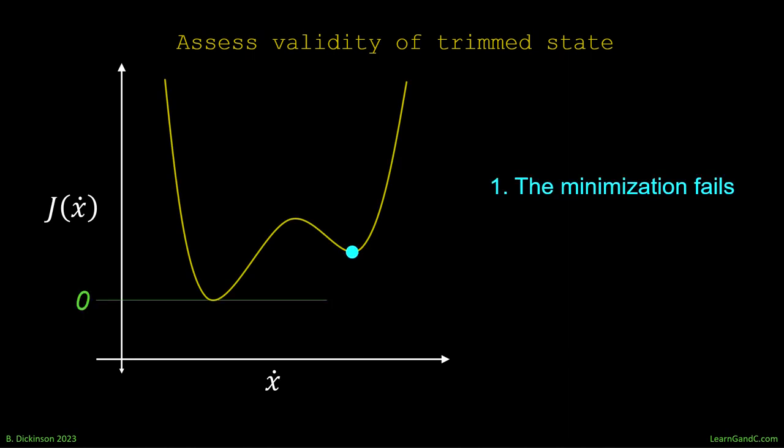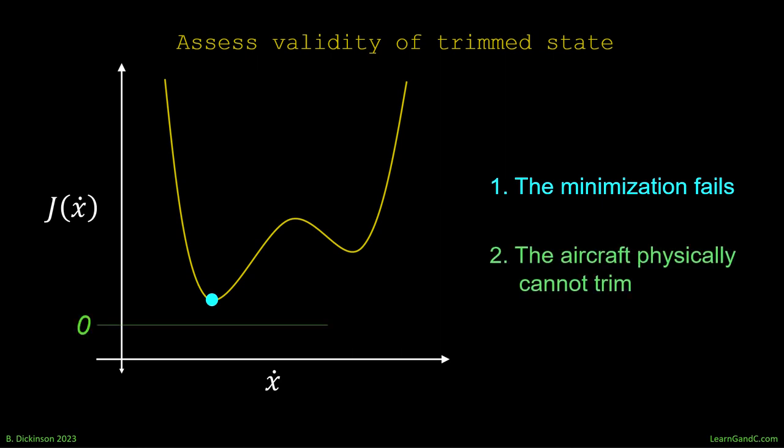There are two main things to consider when assessing how valid a trimmed result is. First, the minimization itself could fail in the sense that it stops at a local minimum. To avoid this, one can adjust the weights, c1 through c3, in the cost function J, or even start with a different initial guess. Now, suppose the minimization does find the global minimum, the true minimum. The other issue is that the aircraft may not be physically able to trim according to our definition of trim. J may be small near zero, but even small values in state derivatives can cause rapid divergence from the desired trim states. It's good to check the cost function J, it's good to check the trimmed state x*, and it's important that we also check the trimmed state derivative ẋ* when assessing the validity of the trim condition.